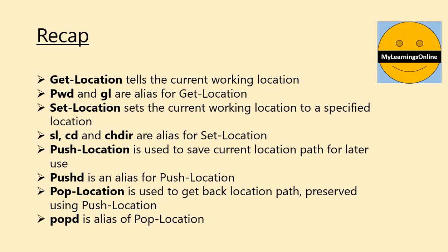Now let's recap. Get-Location tells the current working location; Pwd and gl are aliases for this command. Set-Location sets the current working location to a specified location; sl, cd, and chdir are aliases for Set-Location. Push-Location is used to save the current location path for later use; push-d is an alias for Push-Location. Pop-Location is used to get back the location path preserved using Push-Location; and pop-d is an alias for Pop-Location.